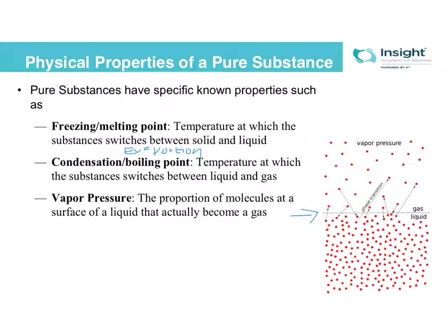Water tends to have a lower vapor pressure because it has really strong intermolecular forces from hydrogen bonding that hold the liquid molecules in liquid form. But other things, like gasoline — if you've ever filled up a tank, you can smell the gasoline in the air. That's because gasoline has a very high vapor pressure. The molecules of gasoline are much more apt to spontaneously go into the gas phase, which is why you're able to smell them in the air.